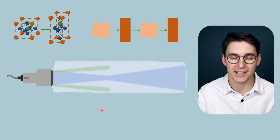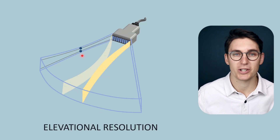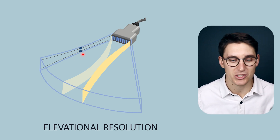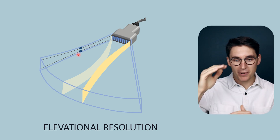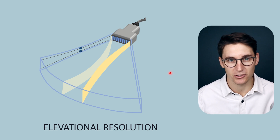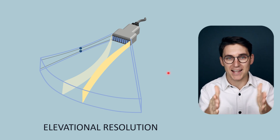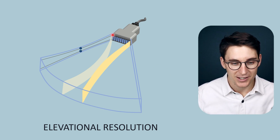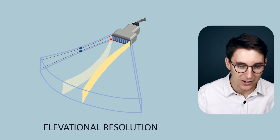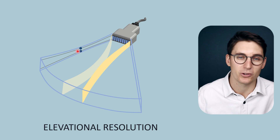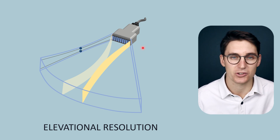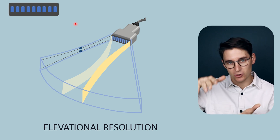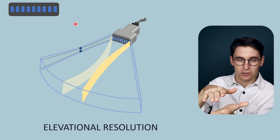Let's briefly look at elevational resolution. Elevational resolution refers to differentiating two discrete objects in the elevational or height plane — they are at the same depth but in a different z-plane. Elevational resolution is much like lateral resolution: lateral resolution relates to beam width, while elevational resolution relates to beam height as it heads into tissue. Much like beam width narrows at a focal zone, the elevational height also narrows at a focal point, and this is dependent on the height of the transducer elements.